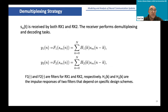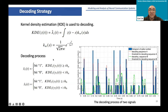For the demultiplexing strategy, S_M is received by both RX1 and RX2, which perform demultiplexing and decoding. F1 and F2 are filters for RX1 and RX2 respectively, and H1(K) and H2(K) are the impulse responses of the two filters. The kernel density estimation (KDE) method is used for decoding. Different from simple histogram counting, KDE weights data around each center sample according to distance by convolving the data points with the kernel function. For spike firing rate estimation, the KDE method convolves the spectrum with the kernel function to obtain multiple kernel functions, which are linearly superimposed to get a smooth estimation of the firing rate.